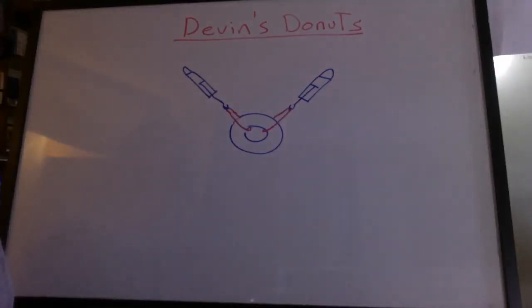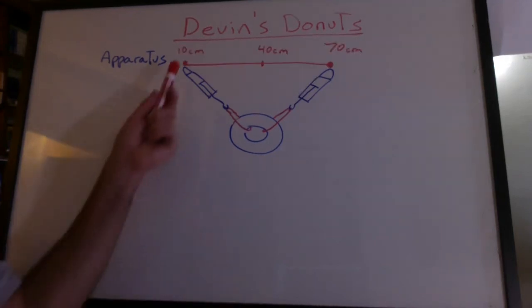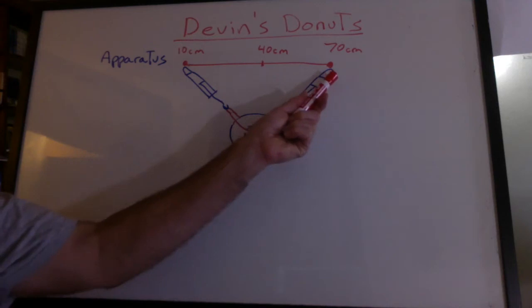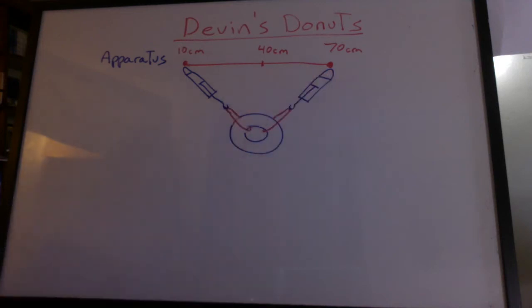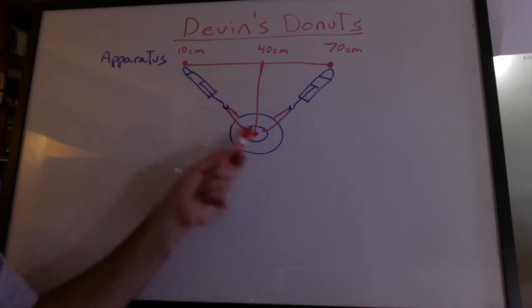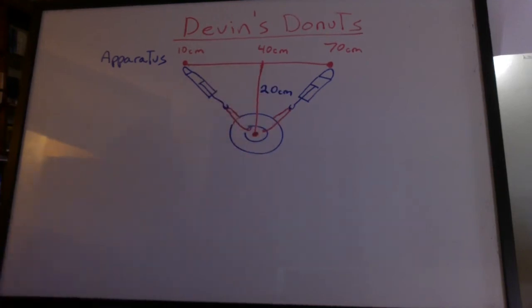Well, what do we have here? It's a diagram of the apparatus. The meter stick across the top read 10 centimeters, 70 centimeters, and 40 right in the middle. We used another meter stick to measure the distance down to the center where these lines intersect. That was 20 centimeters. Horizontally to the middle was 30.